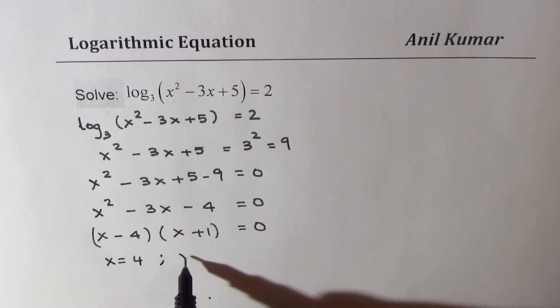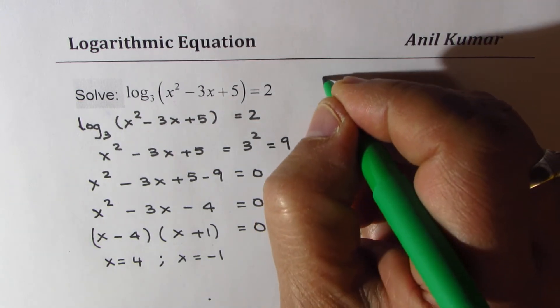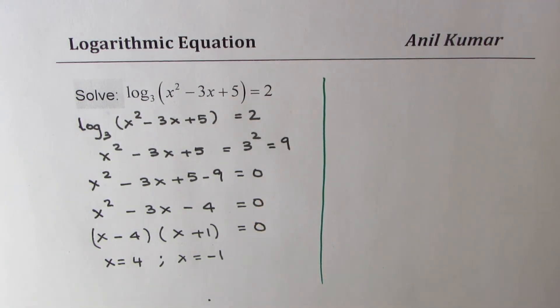In logarithmic equations it is very important to always check your solutions. We do have answers here but it's important to understand that there could be extraneous roots. So let us substitute 4 and see for ourselves what we get in the equation.